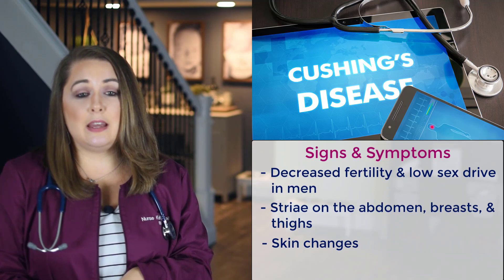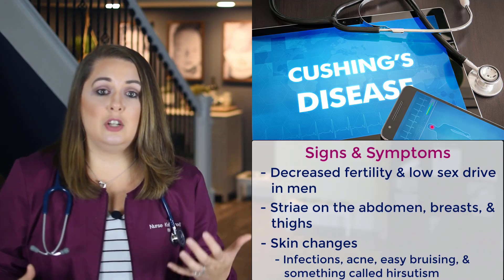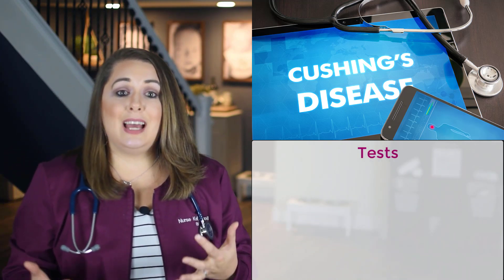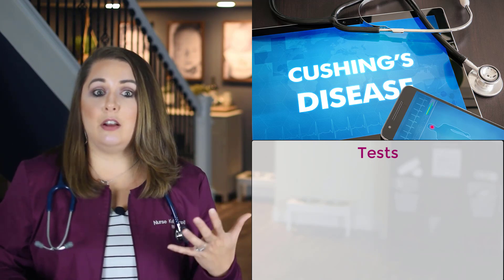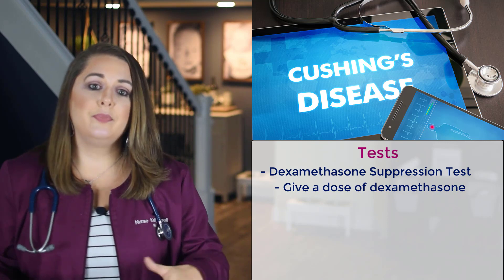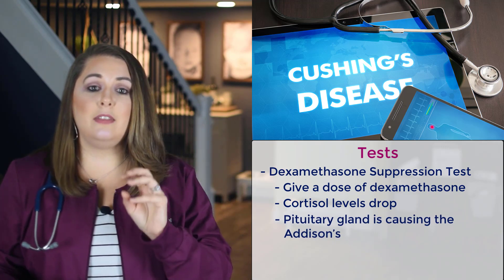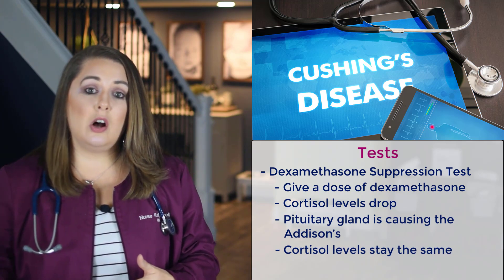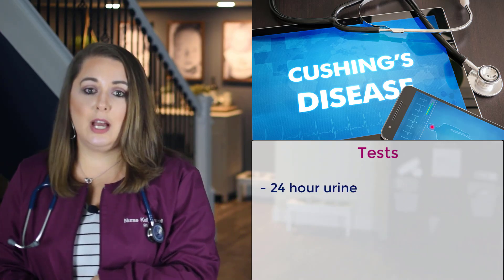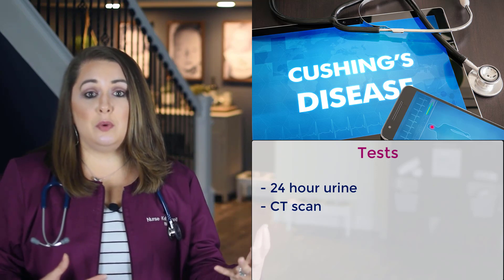You can also see skin changes like infections, acne, easy bruising, and hirsutism on the face, neck, chest, and abdomen in women, which means excessive dark hair growth. For diagnostic tests, the first is the dexamethasone suppression test: you give a dose of dexamethasone, and if cortisol levels drop, that indicates the pituitary gland is the cause. If cortisol levels stay the same, it's likely caused by an adrenal gland issue like a tumor. You'll also run a 24-hour urine test to check for increased cortisol levels, and send the patient for a CT scan to rule out any pituitary or adrenal tumors.